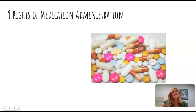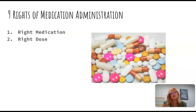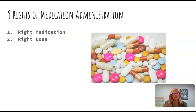First, let's start with the nine rights of administration. Number one is the right medication — this means that you check against the order and make sure that you have the correct medication from the doctor's order. Number two is the right dose. The order will also include the dosage, and you want to make sure that the medication you pulled from the storage cabinet matches the medication on the order.